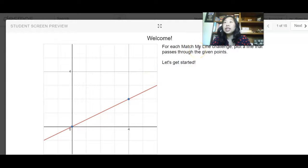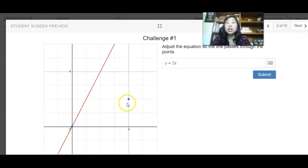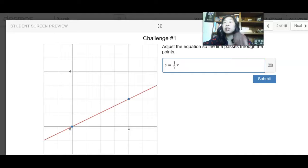So it says for each match my line challenge, plot a line that passes through the given points. So you are given two points here and you have to enter the line so that this red line crosses through the two blue points. So I can see here that my slope needs to be one half. So I can just click one half and boom, there it is.